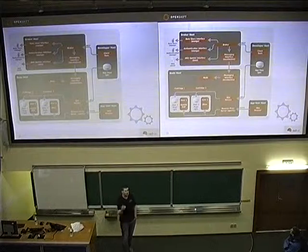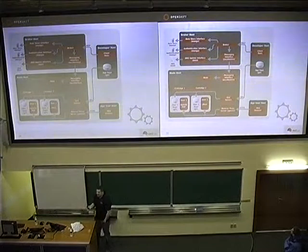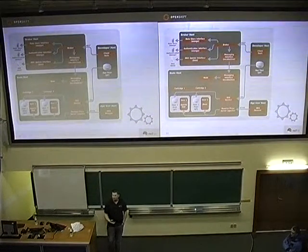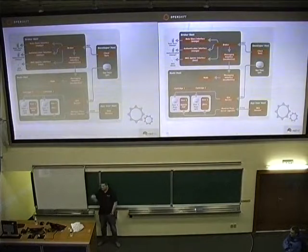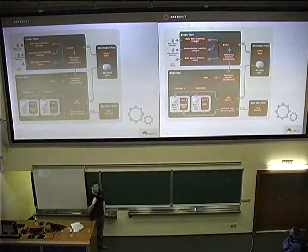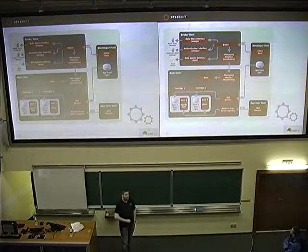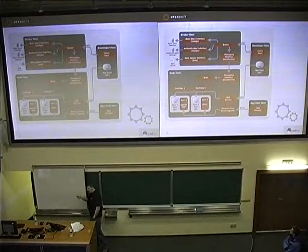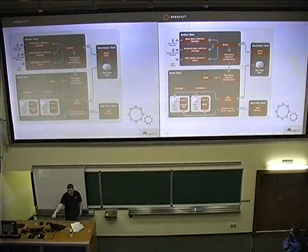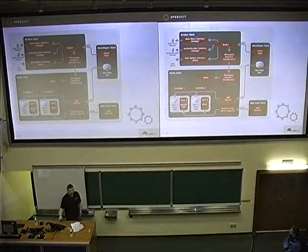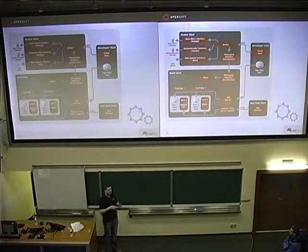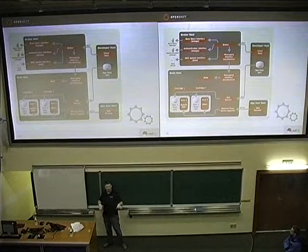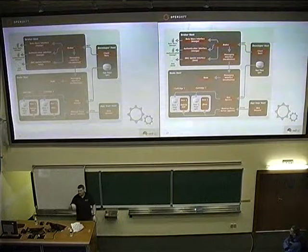The broker is the central piece of OpenShift — the most important one. It decides how to handle the request. It checks some data storage on the left side and determines if the request is possible. If it's okay, it sends a request to the node where we deploy the application. We have two different kinds of systems: the node and the broker. On nodes we deploy applications; the broker is just management.